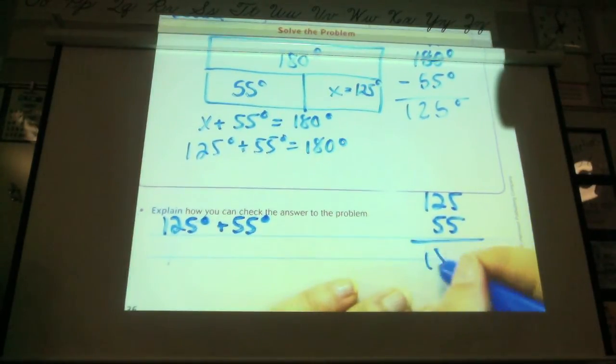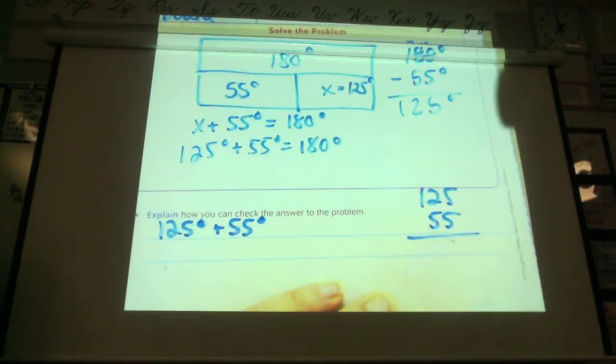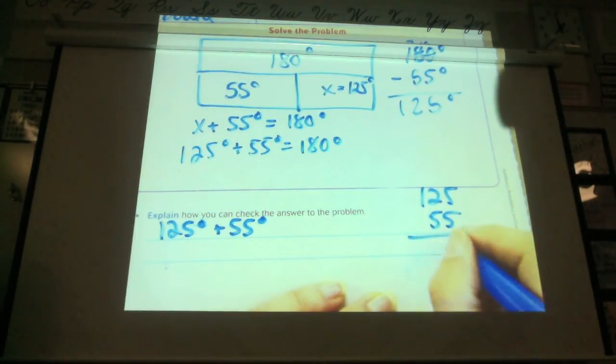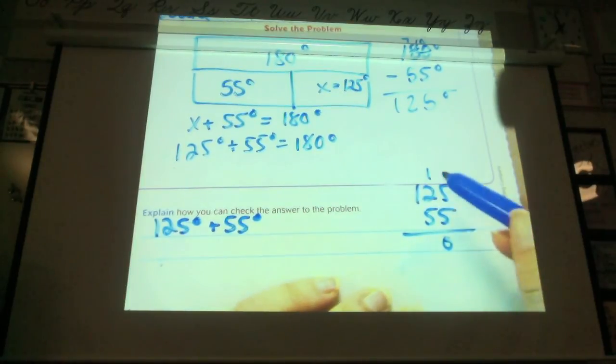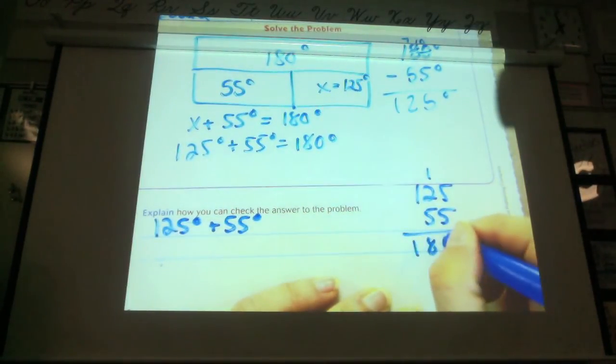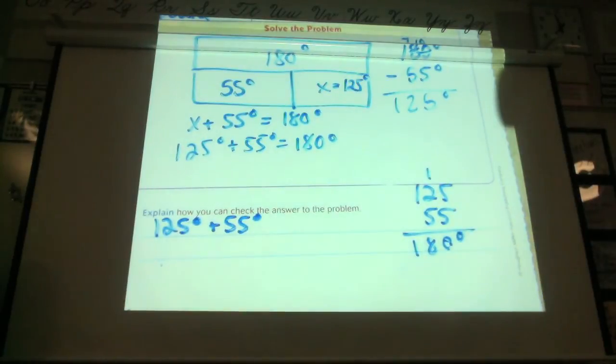Okay. So, should I just do this? No. No. I actually should add. That's the whole point of checking. Adding to check is to see if that's correct. So, when I do 5 plus 5, I get 10. I regroup the 1. 5 plus 2 is 7 plus the 1 is 8. And 1, I bring down. And did I get 180 degrees when I added that? Yes. Yes. So, I know that my answer is correct.